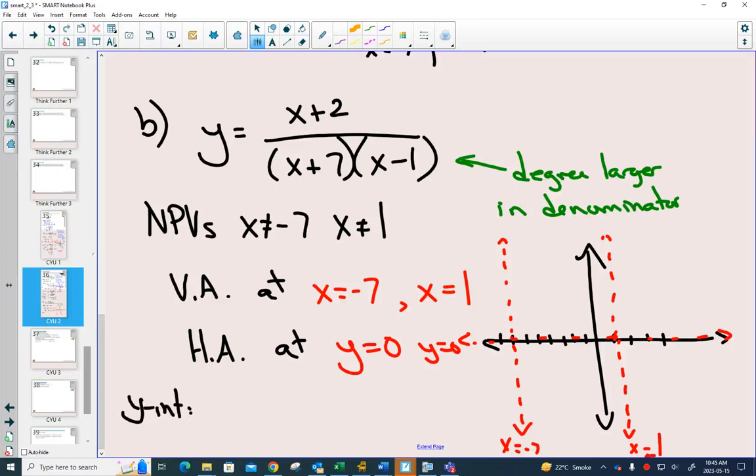Let's find some points, starting with your y intercept. If you plug in 0 for x, you get 2 over negative 7. So we go and label that point. 2 over negative 7.